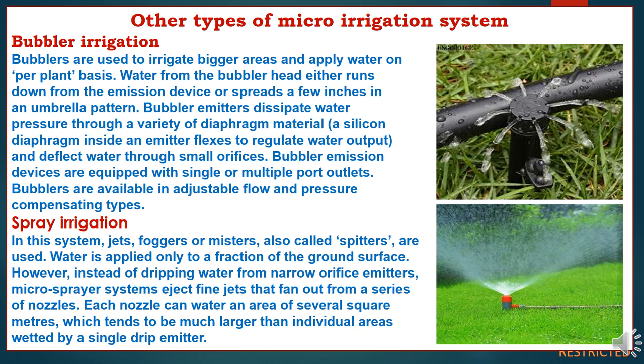Another type is spray irrigation. In this system, jets, foggers, or misters (also called spitters) are used. Water is applied only to a fraction of the ground surface. Instead of dripping water from narrow orifice emitters, micro-spray systems eject fine jets that fan out from a series of nozzles. Each nozzle can water an area of several square meters, which tends to be much larger than individual areas watered by a single drip emitter.